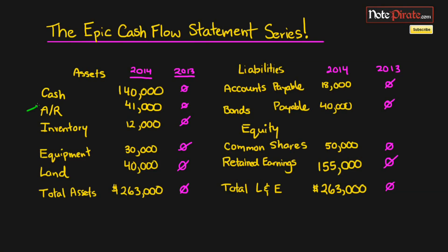Now that we've checked off accounts receivables, inventory, and accounts payable, we can say that we've properly adjusted for the current assets and current liabilities on our cash flow statement. We can move on to our income statement and actually add back in the non-cash expenses.